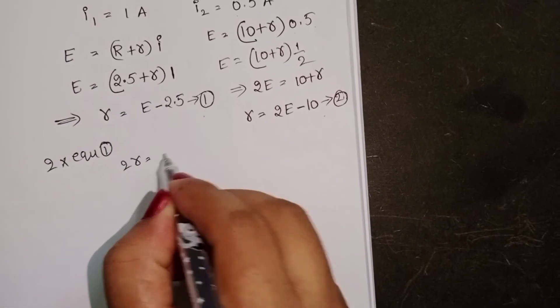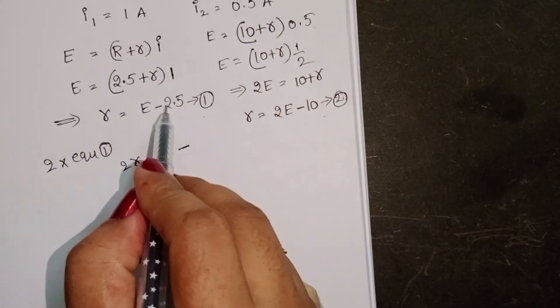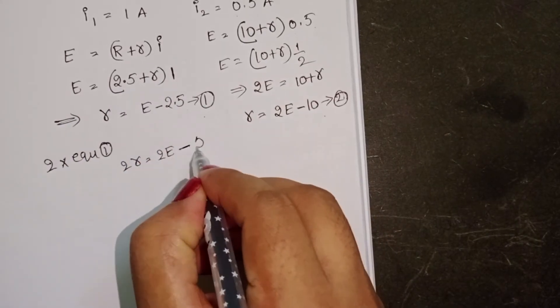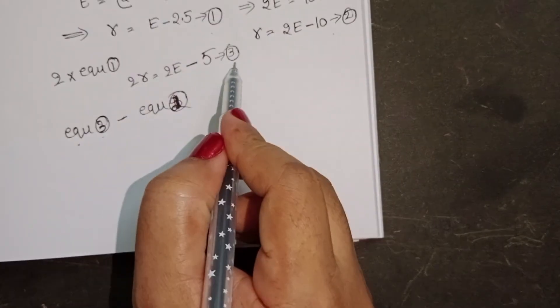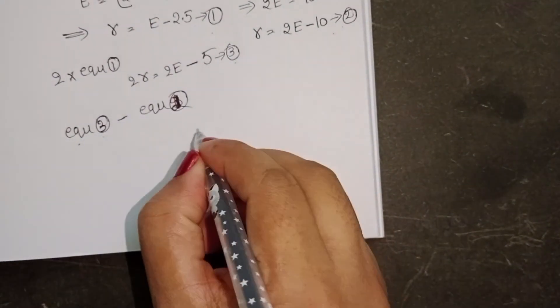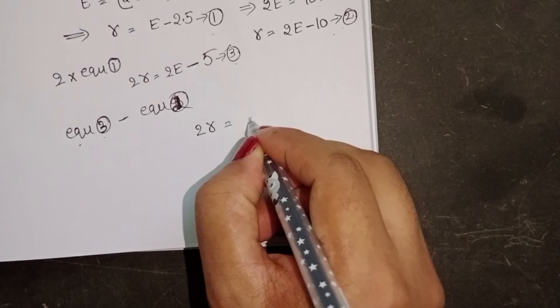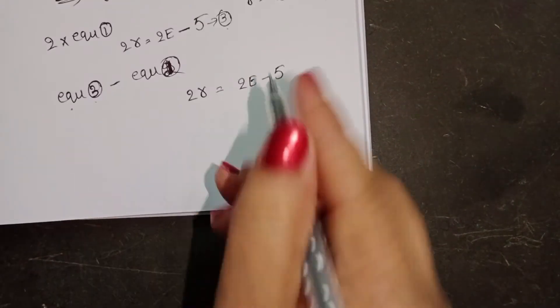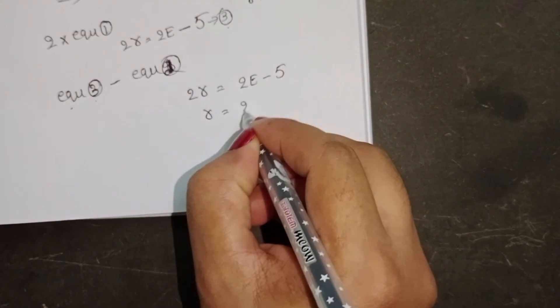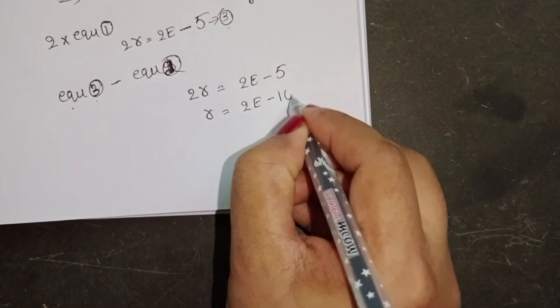2R equals 2E minus 2.5 into 2, it becomes 5. Now take equation 3 minus equation 2. 2R equals 2E minus 5. Here R equals 2E minus 10.